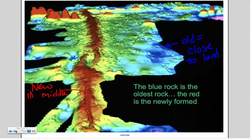This is a time scale of the rocks that are in the ocean. The blue rock is the oldest because it is closest to the continents. And the red rock is the newest because it's where the magma comes up to the surface.